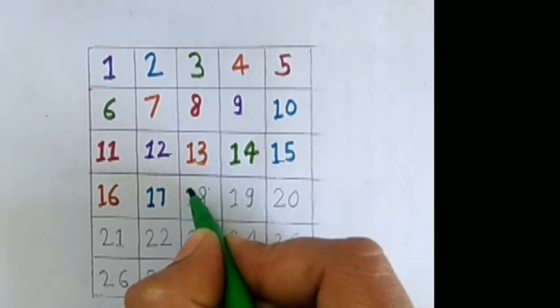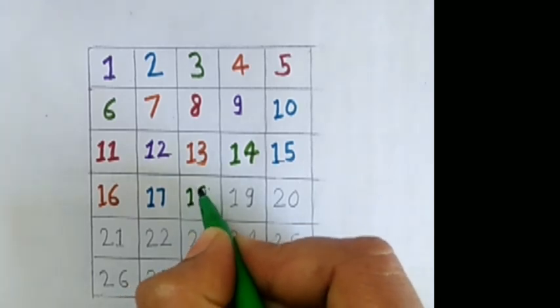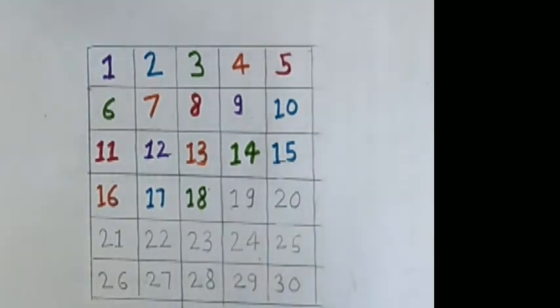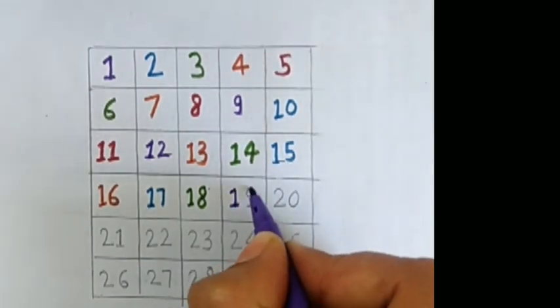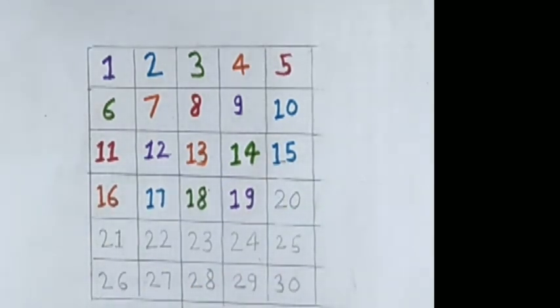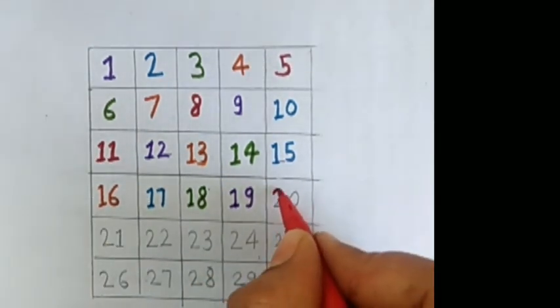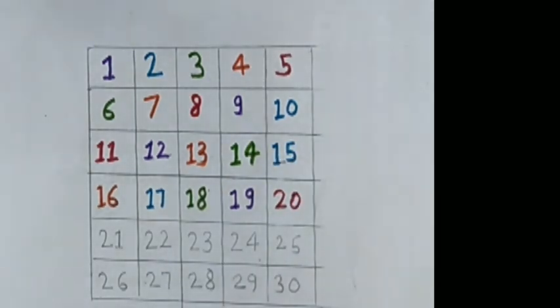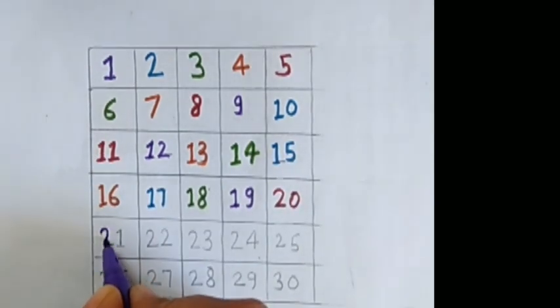7, 17, green color. 1, 9, 19, purple color. 2, 0, 20, red color. What comes after 20?